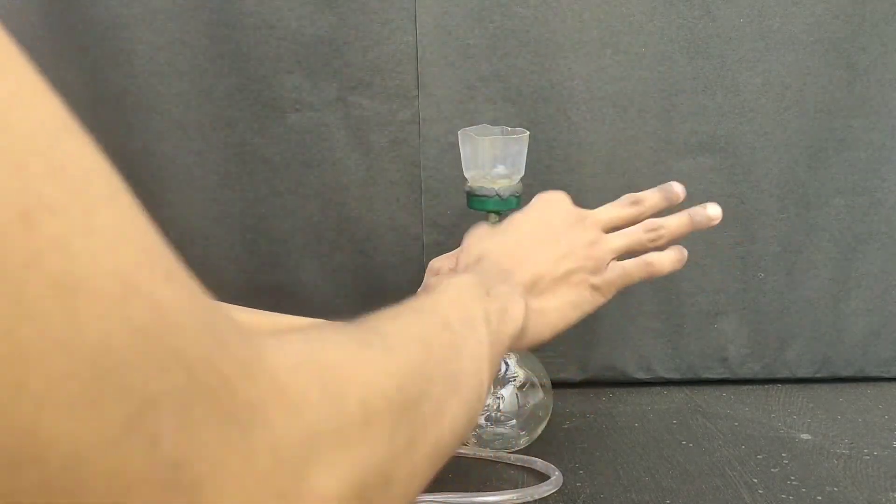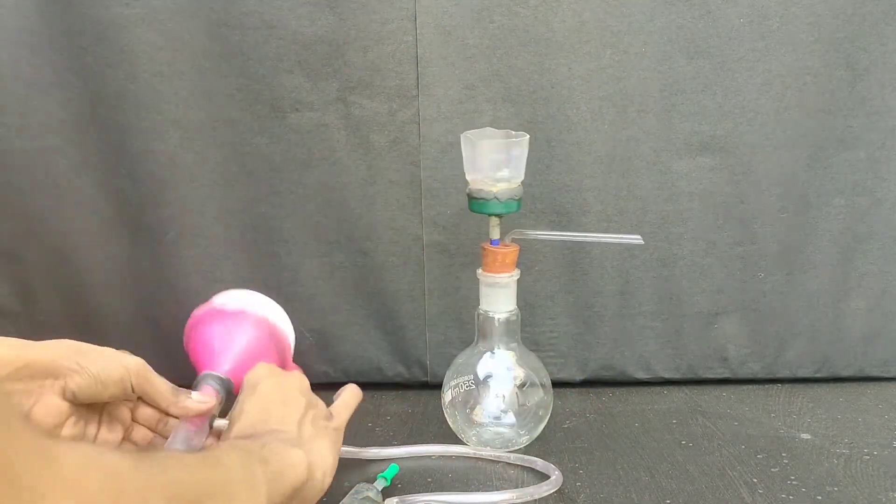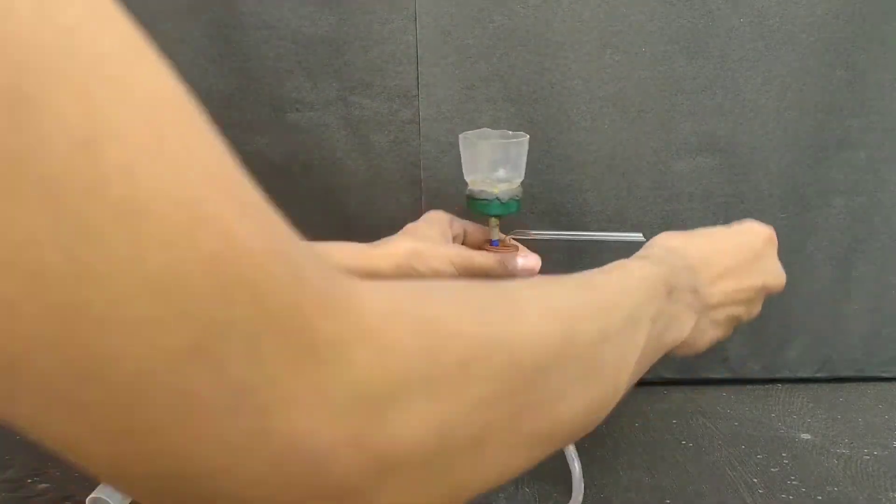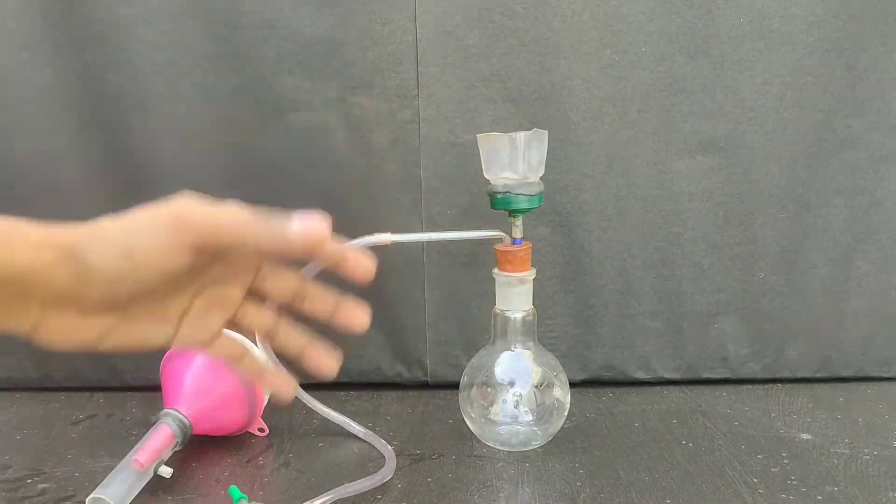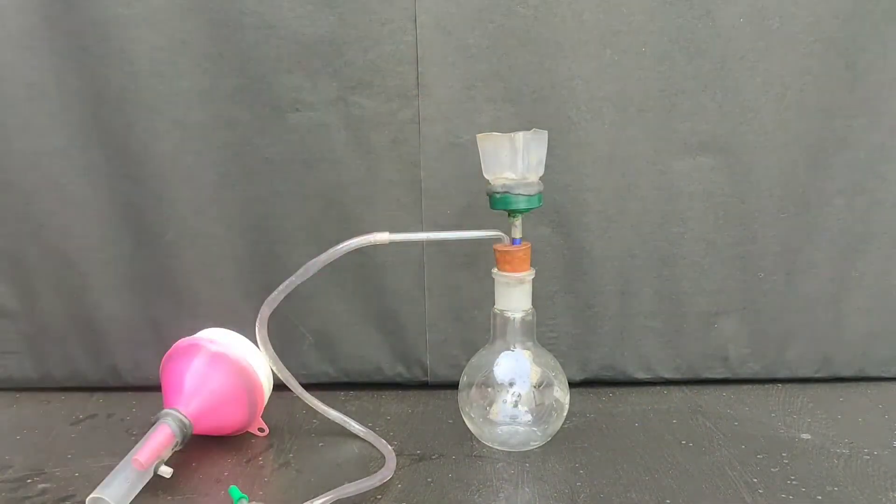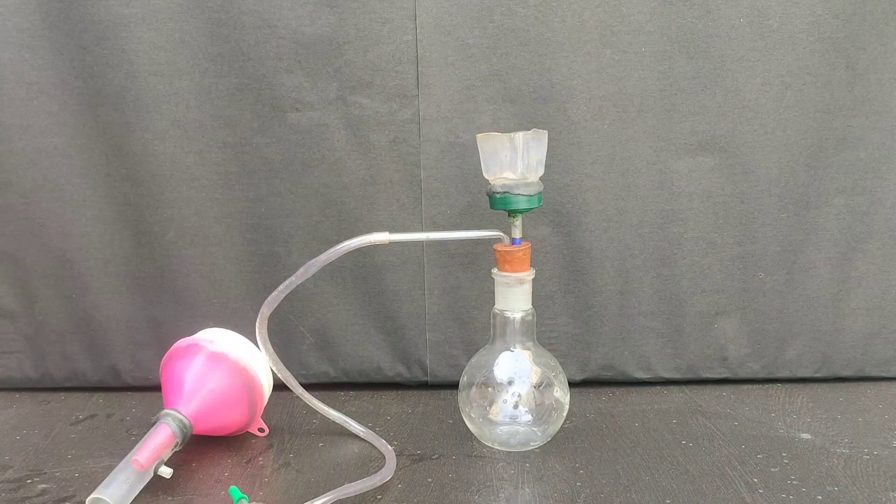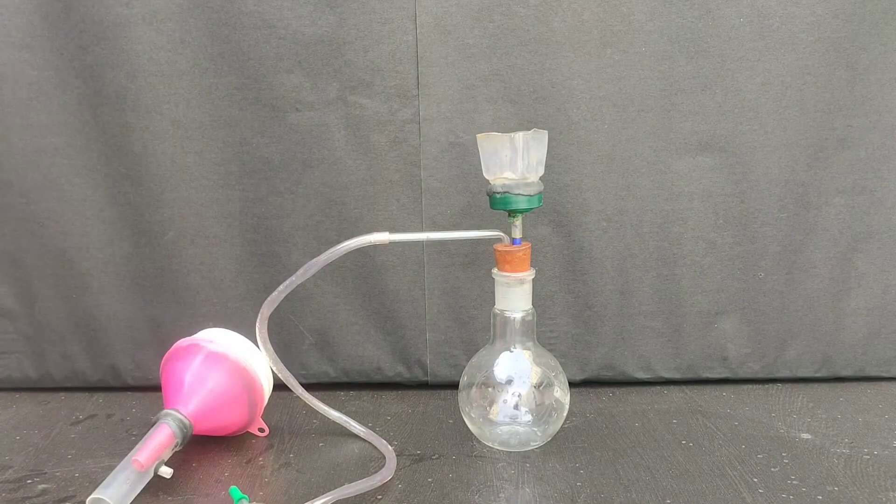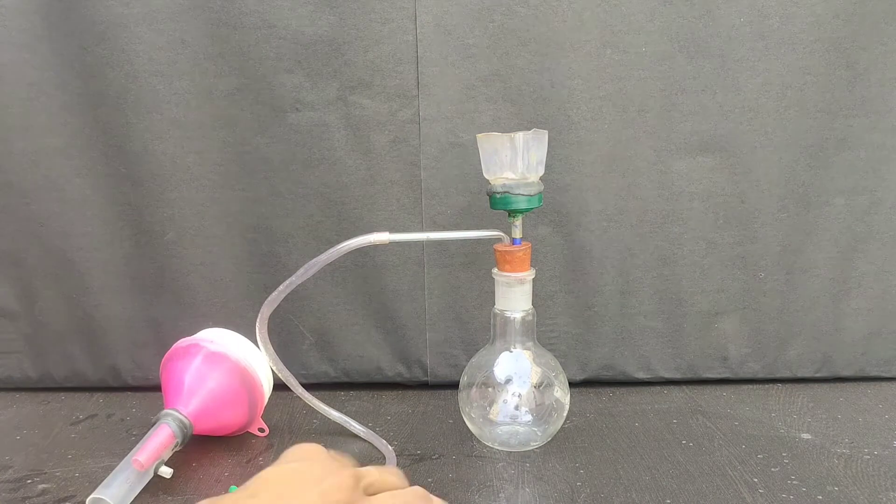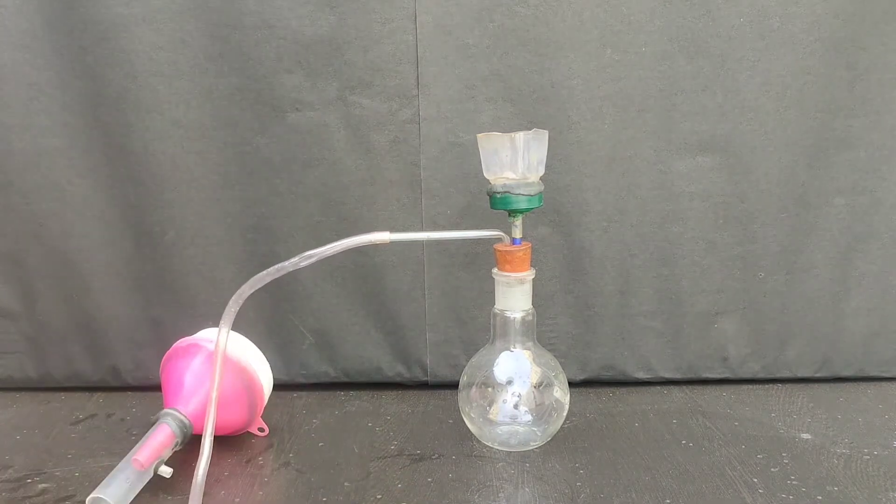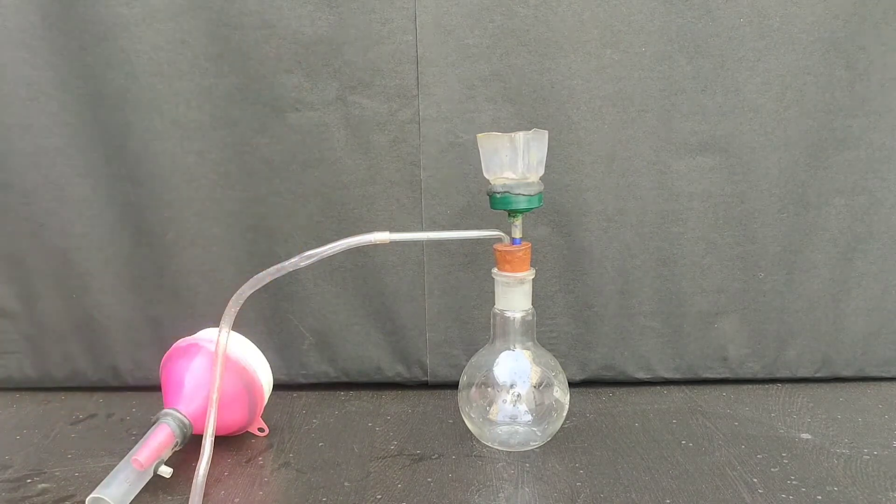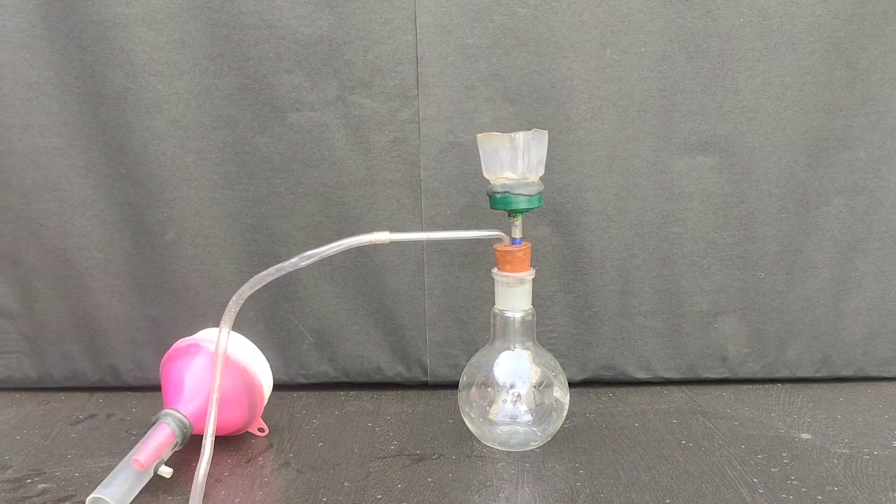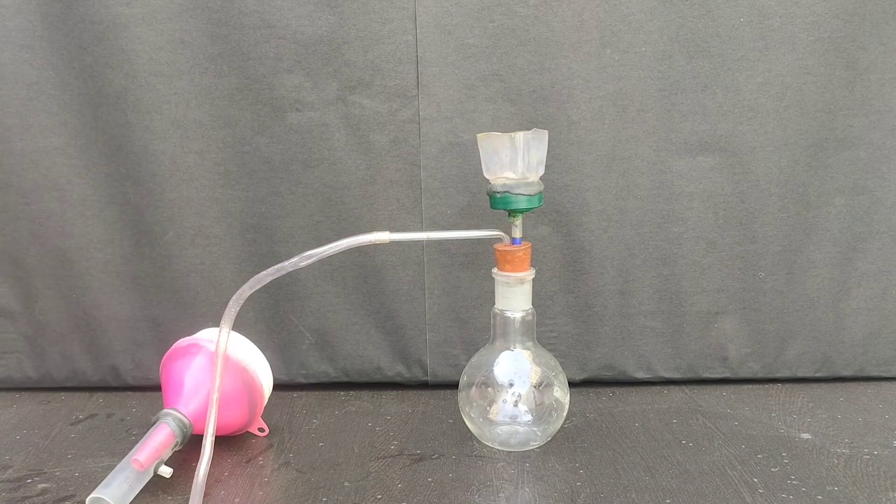Now this can be connected onto this flask with this two-hole cork like this, and this tube can be connected to vacuum. So this is, sorry, not gooch funnel, this is Hirsch funnel. It is generally a small Buchner funnel we use for small filtrations. So this was my DIY vacuum filtration setup. Now I will show you a demonstration.